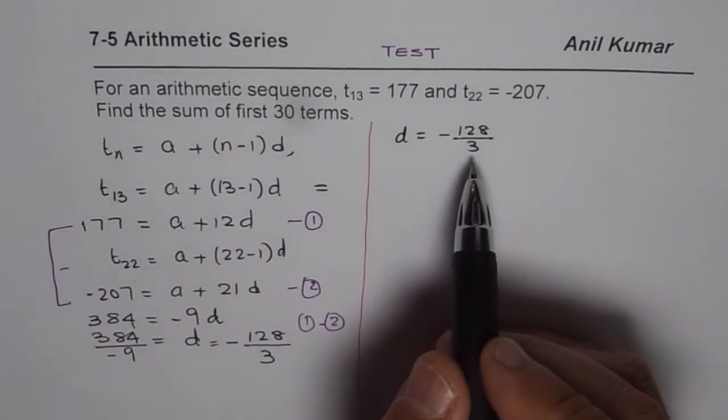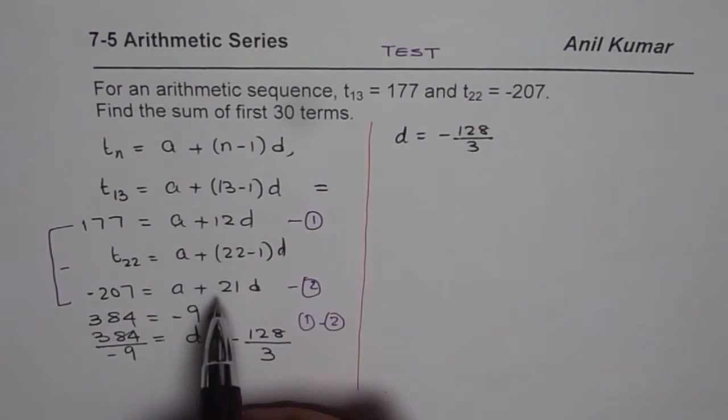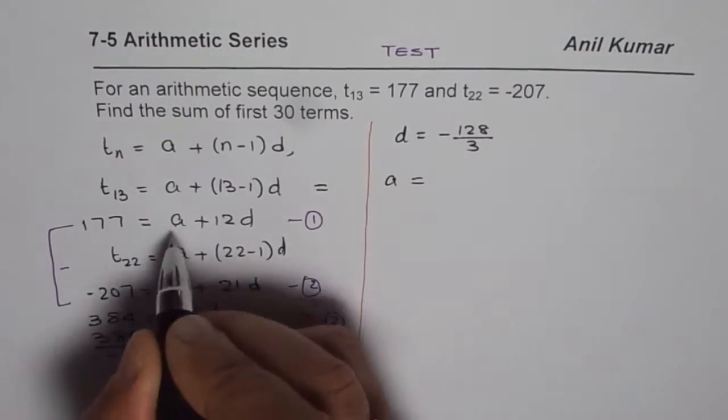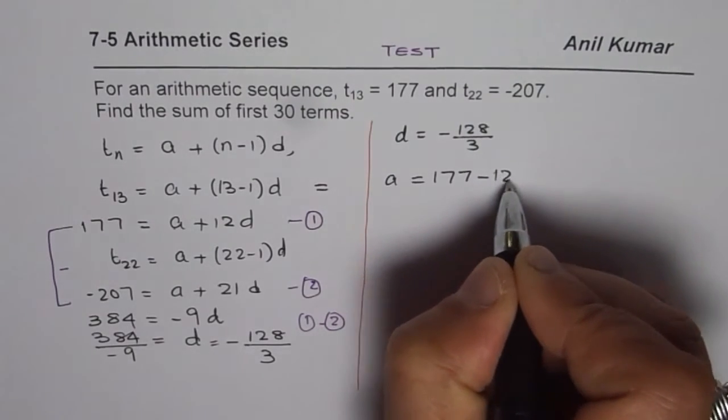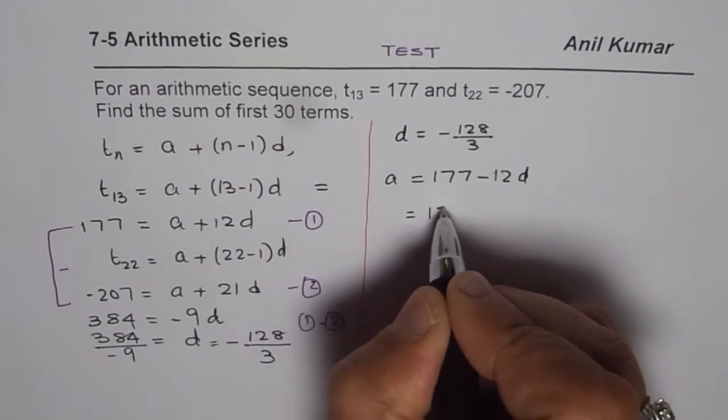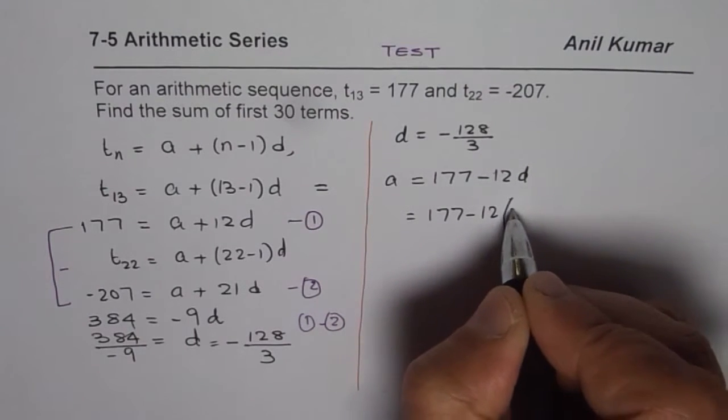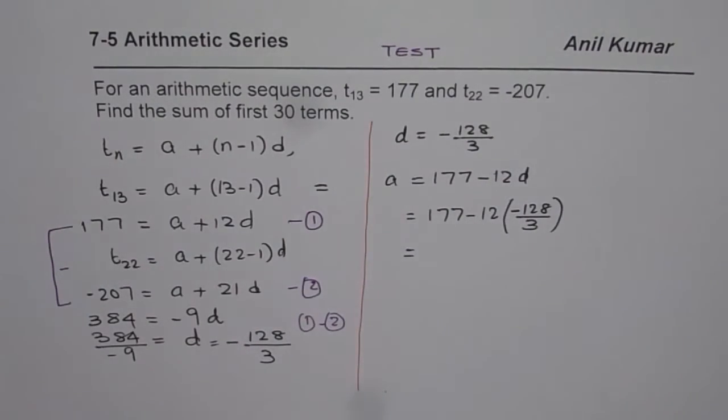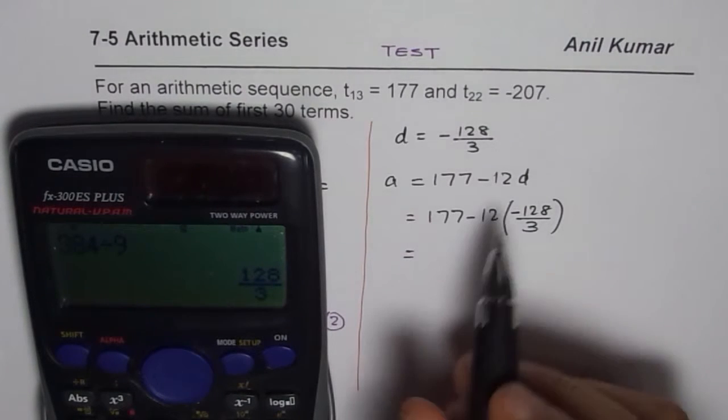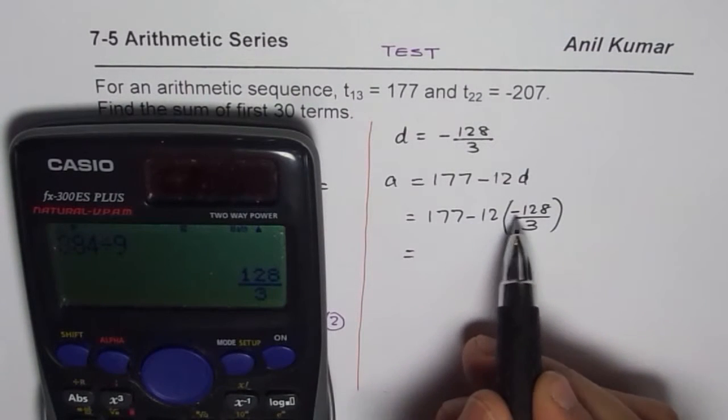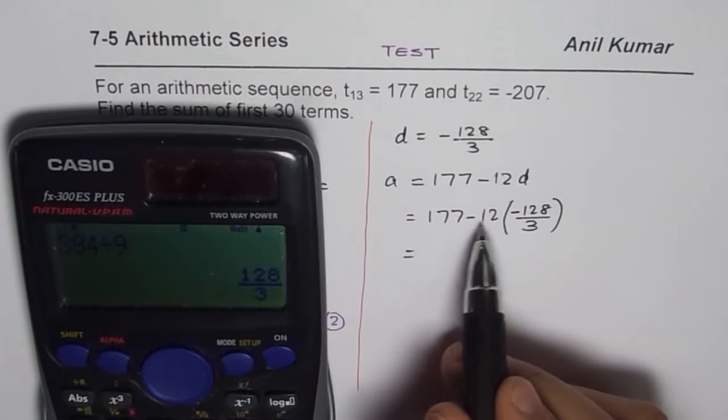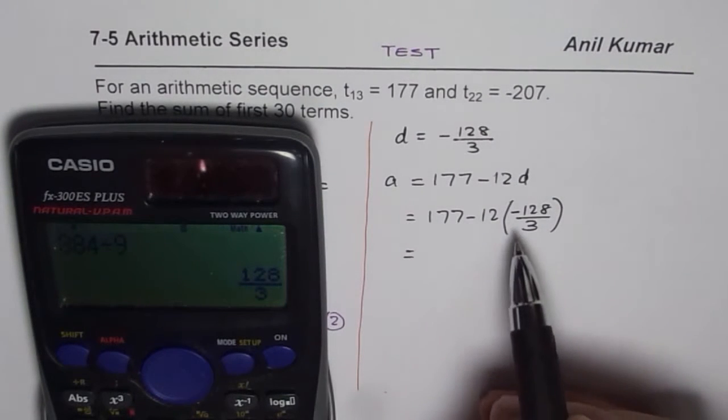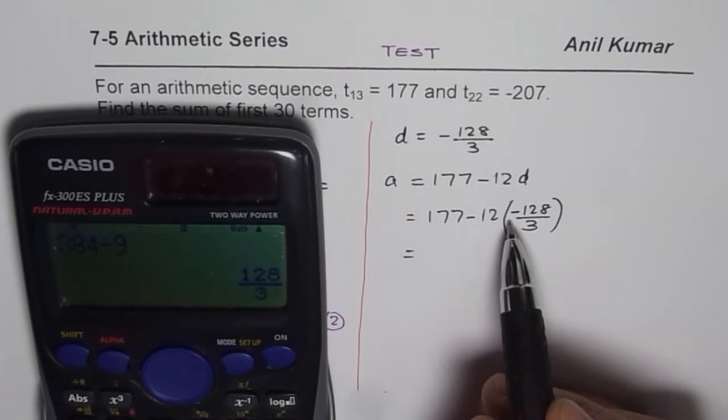Once you know d, you can find a using one of your equations. Using equation 1, rearrange to get a = 177 - 12d. Since we know d, we have a = 177 - 12(-128/3). Put it in brackets and evaluate using calculator. Minus times minus becomes plus.